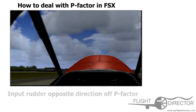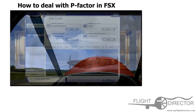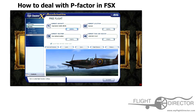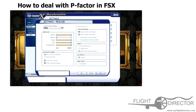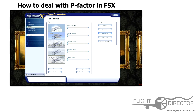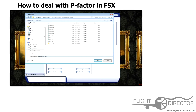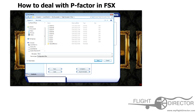Another way to deal with P-Factor is to turn it off in the FSX settings. First of all, click Settings, then the Realism tab. On Realism, you can see there's a setting called P-Factor. Simply drag that to nothing, click OK, and then save your setting. Now you'll have absolutely no P-Factor and you'll go straight down the runway, not having to correct a thing.